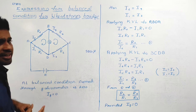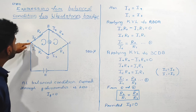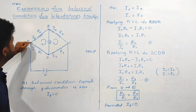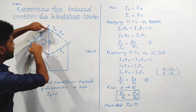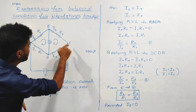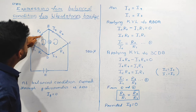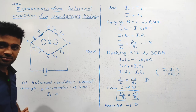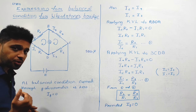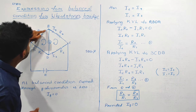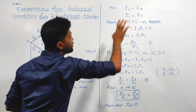At balanced condition, IG is equal to zero. The current flows from A to B. Therefore, I2 is equal to I4.